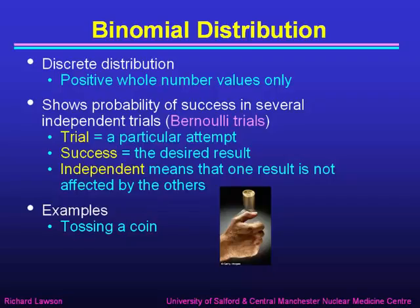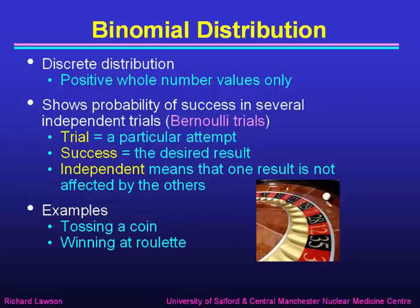Some examples of that are tossing a coin, where each trial will be one toss of the coin. Success might be getting a head. Each toss of the coin is independent of the others — the result of getting a head or tail on this toss isn't affected by the previous one, because there's no way the coin can know what happened last time. Likewise, winning at roulette: the success is winning your bet, the chance of winning is independent of previous wins, and therefore this constitutes a binomial distribution.